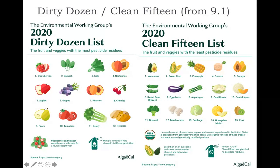We call these the dirty dozen and the clean 15. The dirty dozen are the fruits and vegetables that retain the most pesticide residue, so you always want to buy the dirty dozen organic if you can. The reason is that with the dirty dozen — strawberries, apples, grapes — you're eating the outside of the product, which is where pesticide and herbicide ends up. They say you can't actually clean them even by washing. The clean 15, like avocados, pineapples, and papaya, are products where you're not eating the outside — you're eating the inside or unwrapping it — so they tend not to contain as much pesticide even after washing.